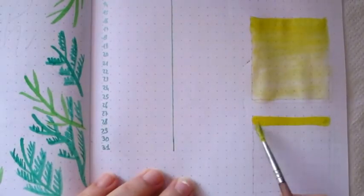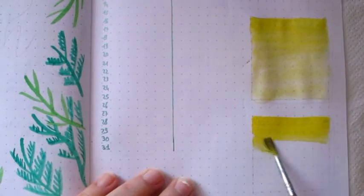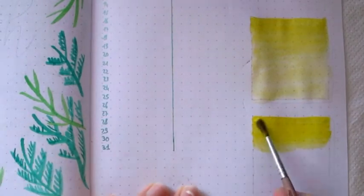I've used again watercolors to draw three post-its: Notes section, goals of the month, and the next month section.